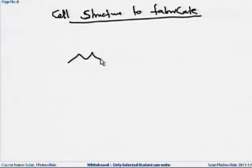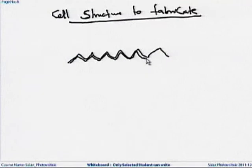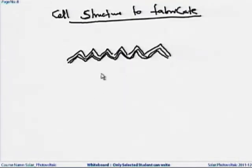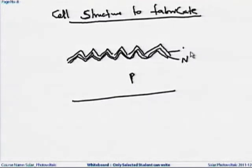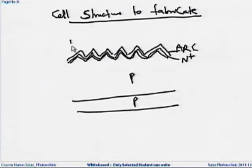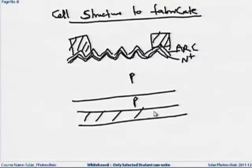We will have the texture and then the emitter, the anti-reflective coating, the junction, the P side, N side — specifically N-plus — then the ARC, and P-plus. Metal contacts go at the front and at the back side. This is the simplest structure that we can have for a solar cell.